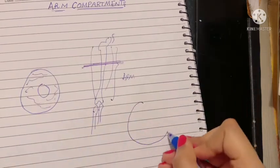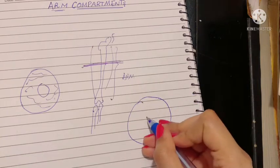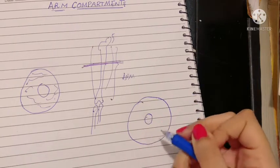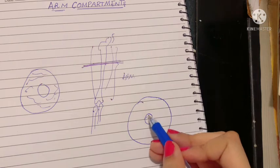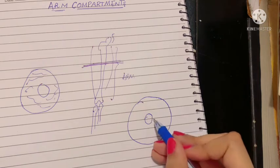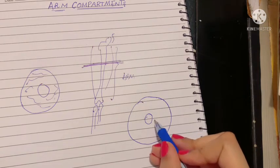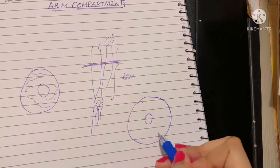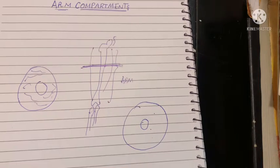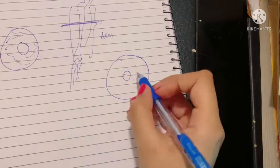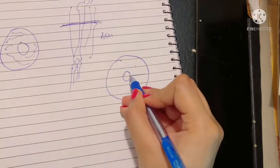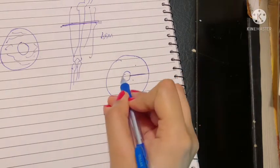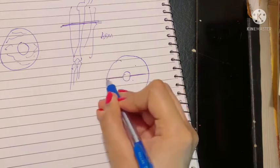When I take the cross section of the arm, this is the humerus bone. What actually is happening is that there is the deep fascia of the arm that is dividing the arm into an anterior and a posterior compartment. The deep fascia here is known as the medial intermuscular septum and the lateral intermuscular septum.